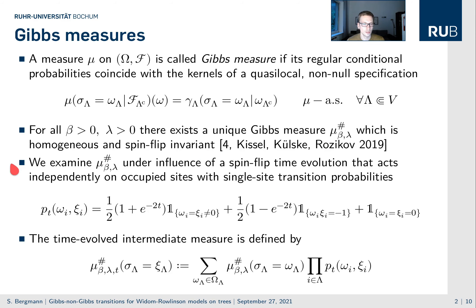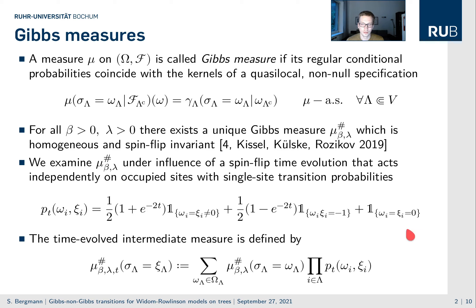We take this measure and examine it under influence of a spin-flip time evolution. This time evolution acts independently on all sites: the empty spins stay empty, and the plus and minus spins get flipped with a constant rate. So the probability of finding a flipped spin grows with time.